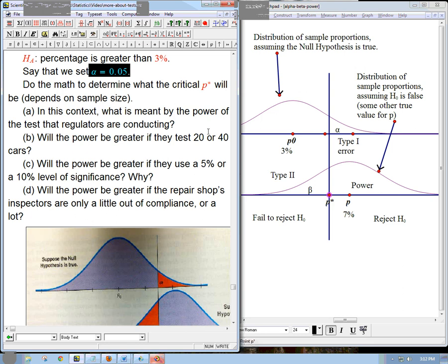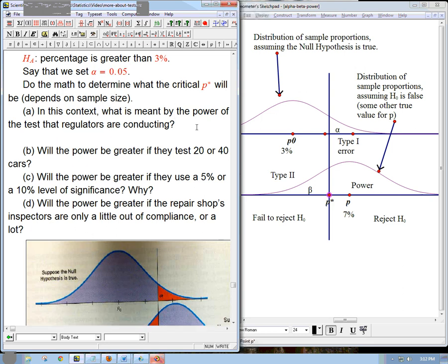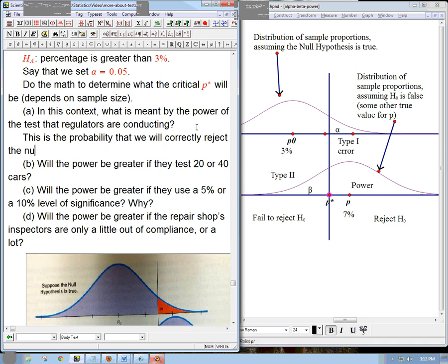So the power, in summary, in this case, the power of the test is the probability that we will correctly reject the null. It's a conditional probability. It's the probability that we reject H_naught, given that H_naught is actually false. So, again, conditional probabilities are actually pretty essential to truly understanding this stuff.